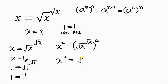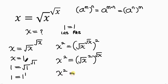So I rewrite the right-hand side as the square root of x raised to the power of 2, and that whole thing raised to the power of the square root of x. Simplifying further, the square cancels out the square root, leaving x squared equals x to the power of the square root of x.